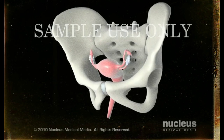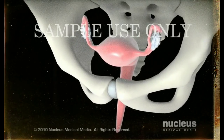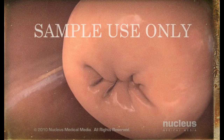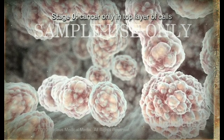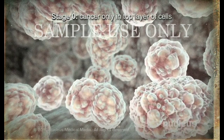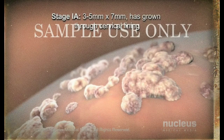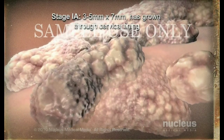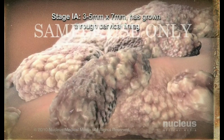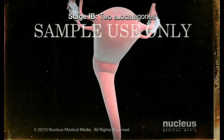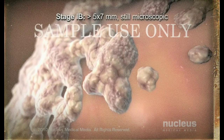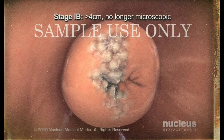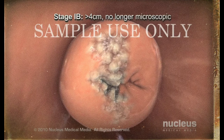Stages of cervical cancer. Staging refers to the extent of the disease. Doctors stage the disease according to the size of the tumor and whether it has spread to nearby tissues or other organs. Stage 0 is not considered invasive because the cancer cells are found only on the top layer of cells of the cervix. Stage 1a is considered invasive cancer because the microscopic tumor grows into the underlying cervical tissue and is 3–5 mm deep by 7 mm wide. Stage 1b has two subcategories: one where the tumor can only be seen with a microscope but is larger than 5 mm deep and 7 mm wide, and a second where the cancer can be seen without a microscope and is larger than 4 cm in diameter.